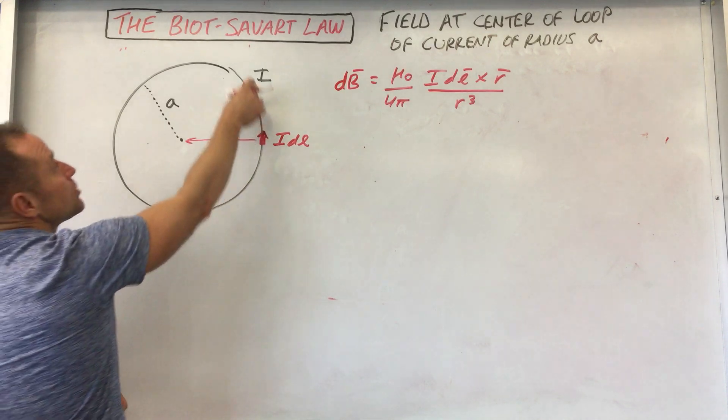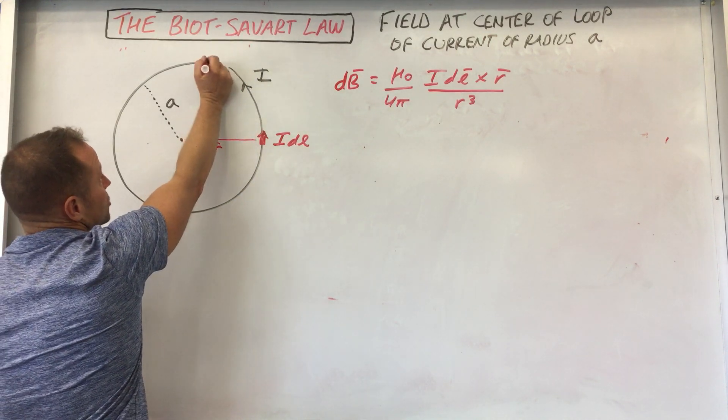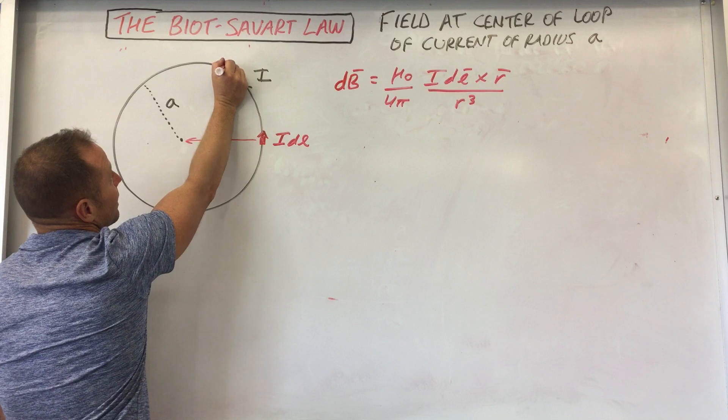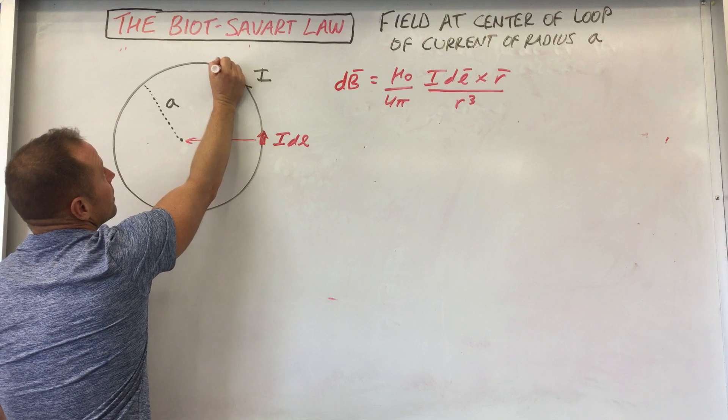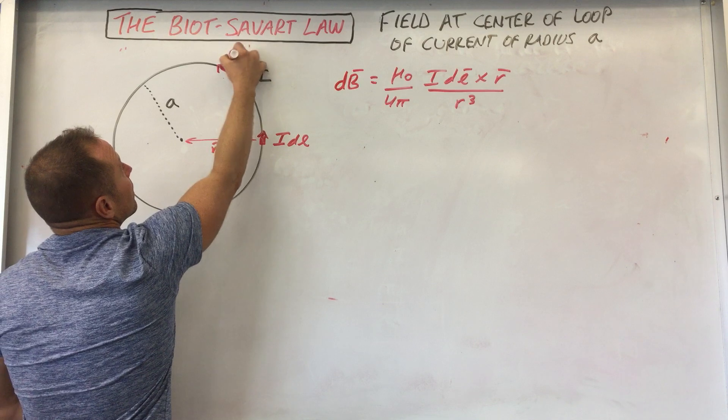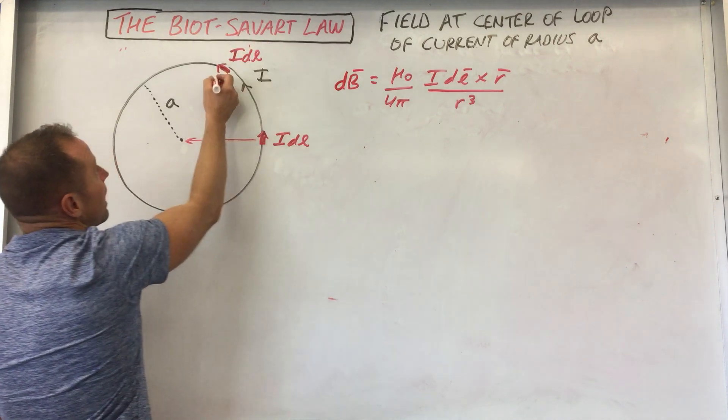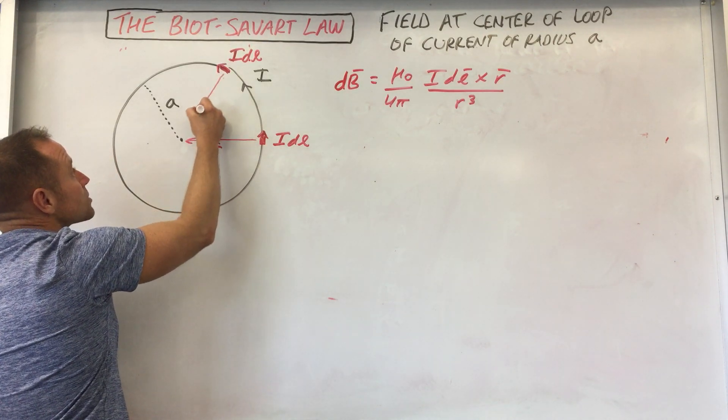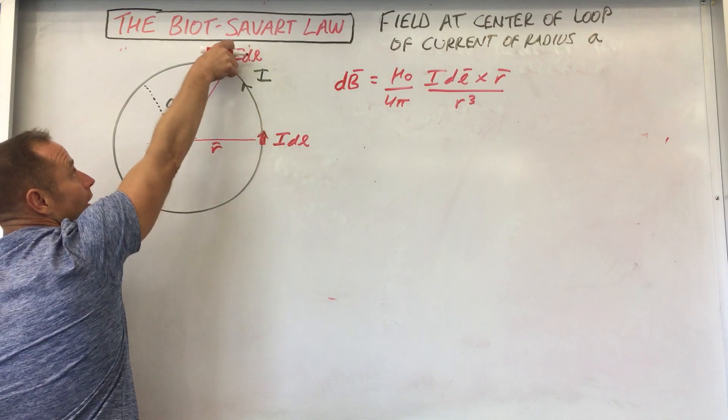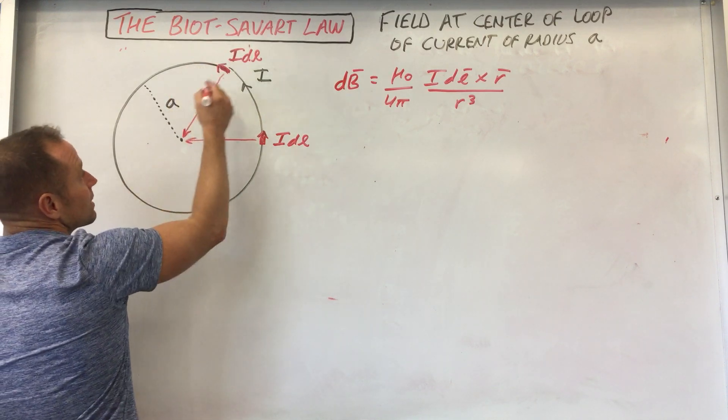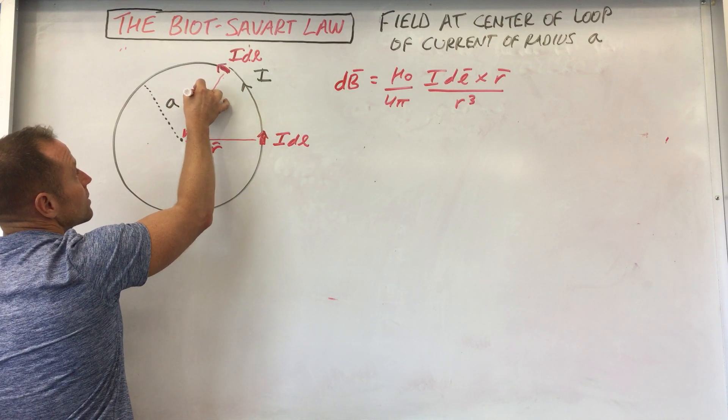And then as you migrate around, so maybe I'll just draw it in one more place. Like here. So here's your IdL up here. And then the R vector that corresponds with that again is going to go from the cause to the effect. So it's going to go this way. There's your R vector when you're up here.